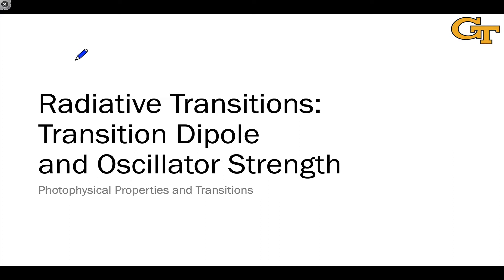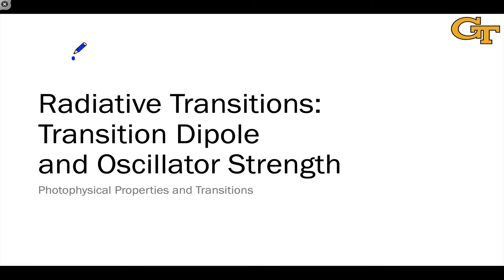In this video, we're going to take a look at the basic theory of radiative transitions, which involve the emission or absorption of light. To begin, let's remind ourselves about the classical picture of light and what a classical description of the absorption of a photon by a molecule might look like.